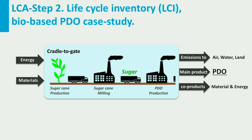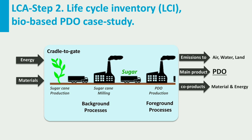In the second step of the LCA, the life cycle inventory, data collection is one of the major activities. The type of data and their collection typically relate to two types of systems: background systems and foreground systems. Foreground systems refer to specific data needed to model a specific system, in this case the PDO production from sugar. Background systems refer to generic materials, like energy, transport and waste management systems. This data can typically be found in databases and literature.